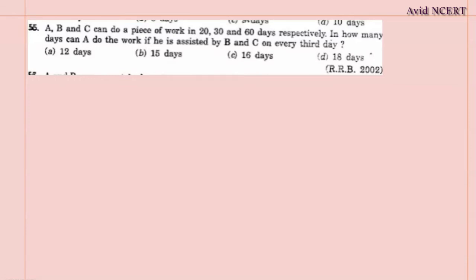Rivers, welcome to my channel. This is Geeta. A, B and C can do a piece of work in 20, 30 and 60 days respectively. In how many days can A do the work if he is assisted by B and C on every third day?